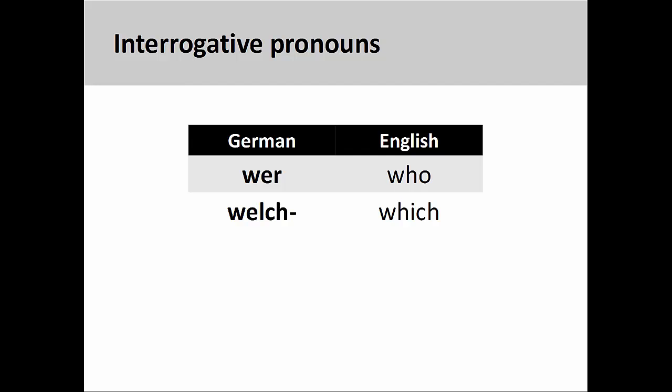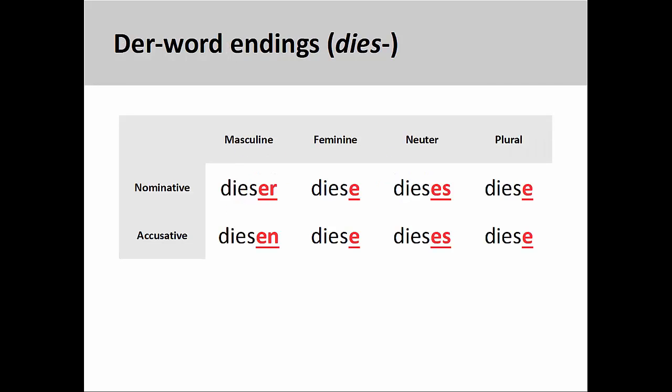These interrogative words are 'wer' (who) and 'welch' (which). It is important to note that the endings for these interrogative words are like the der-word endings we have already studied. This slide shows these der-word endings using the demonstrative pronoun 'dies' (this).